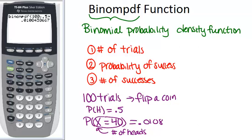So that's how you can use the binomial probability density function button on your calculator to simplify these sorts of calculations and to speed up the process a bit.